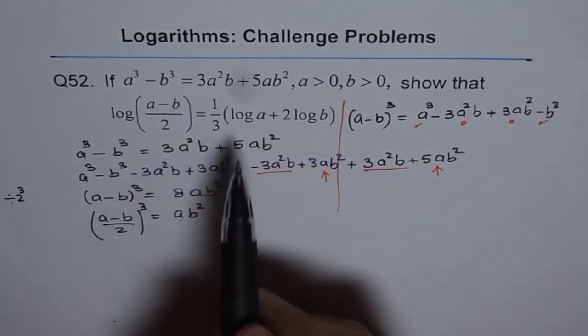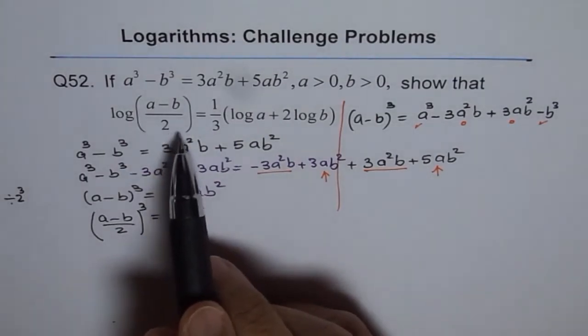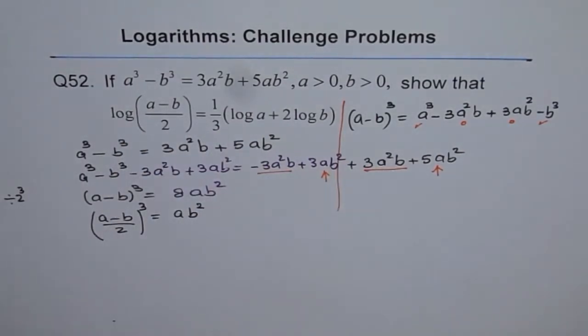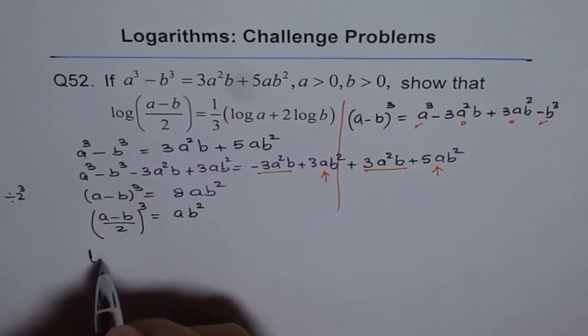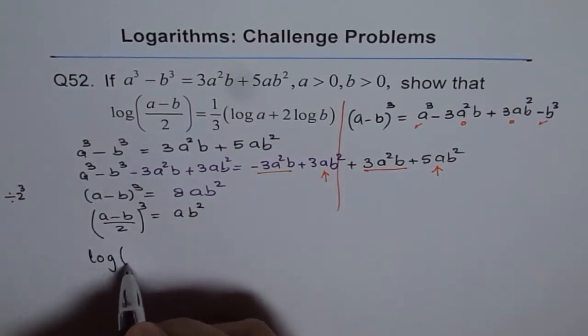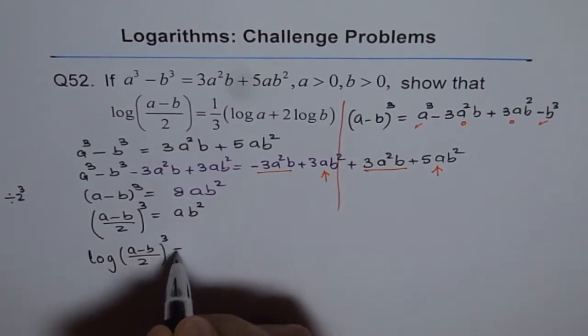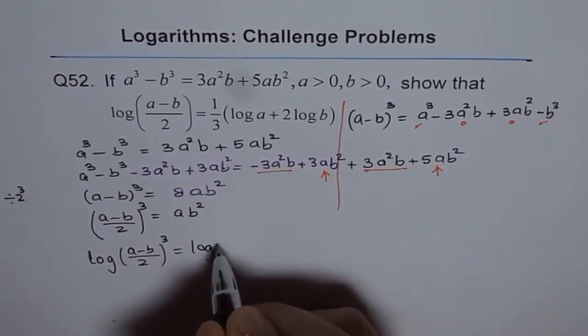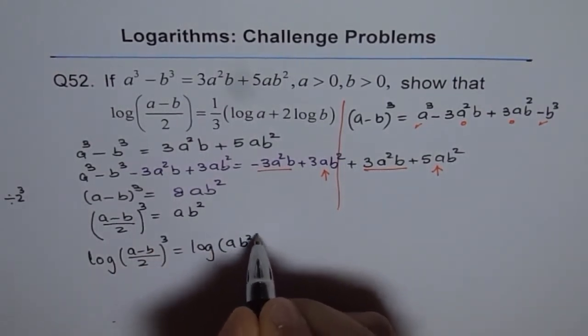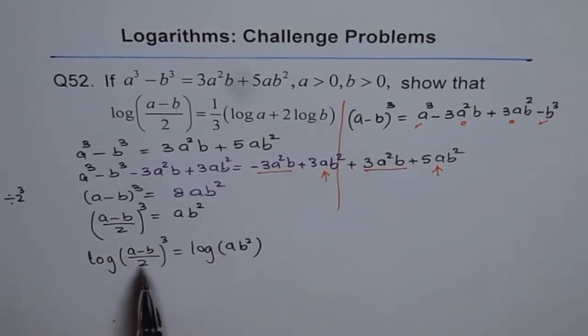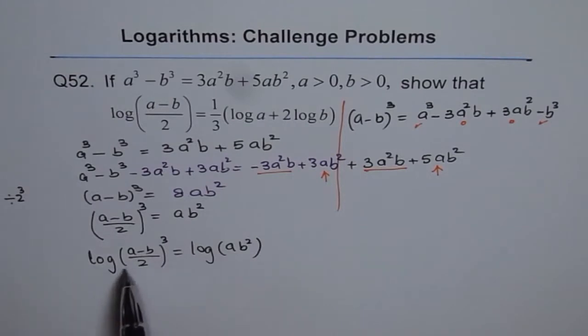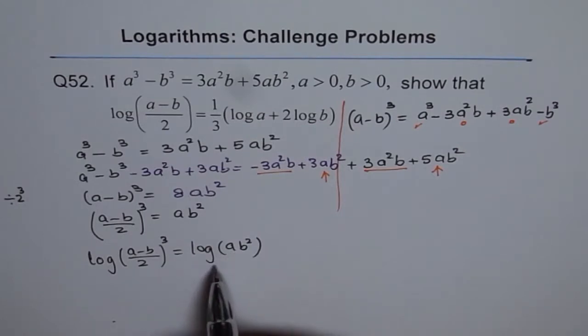Now, to get our result, we need to take log on both sides. So, if I take log on both sides, then I get log of a minus b over 2 whole cube equals to log of ab square. Now, this is like 3 times log of a minus b over 2. And this we can write in the expanded form, product form.